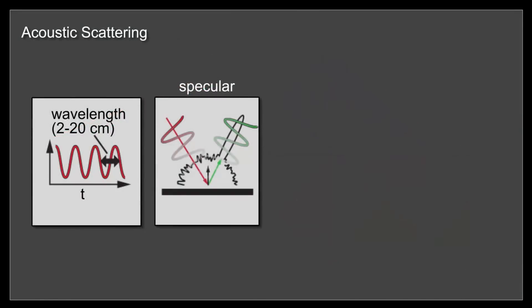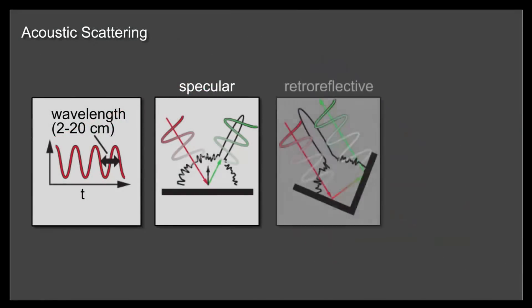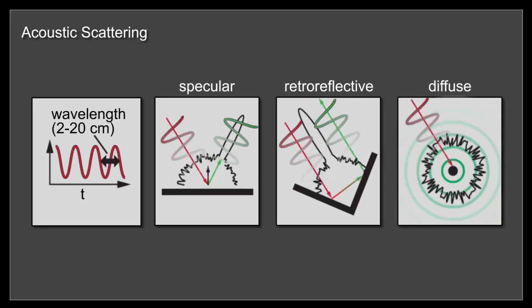In practice, we observe specular scattering behavior off surfaces that are flat relative to the wavelength, and retroreflective-like scattering off corner geometries larger than the wavelength. For scatterers smaller than the wavelength, diffraction of waves around the scatterer produces diffuse scattering profiles.